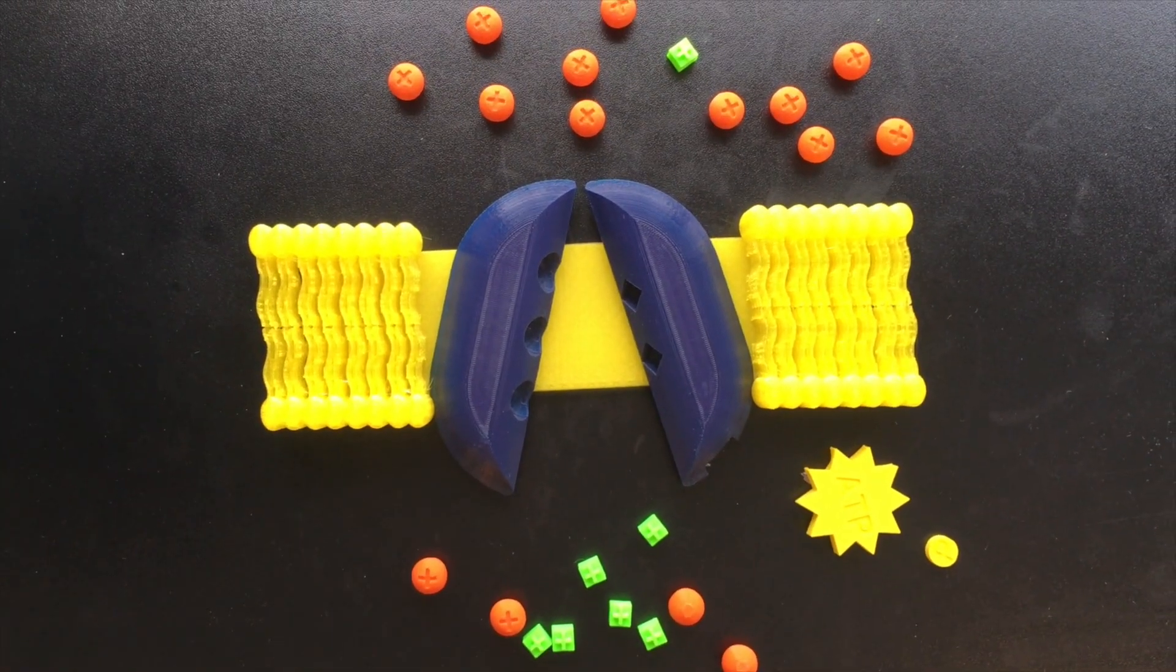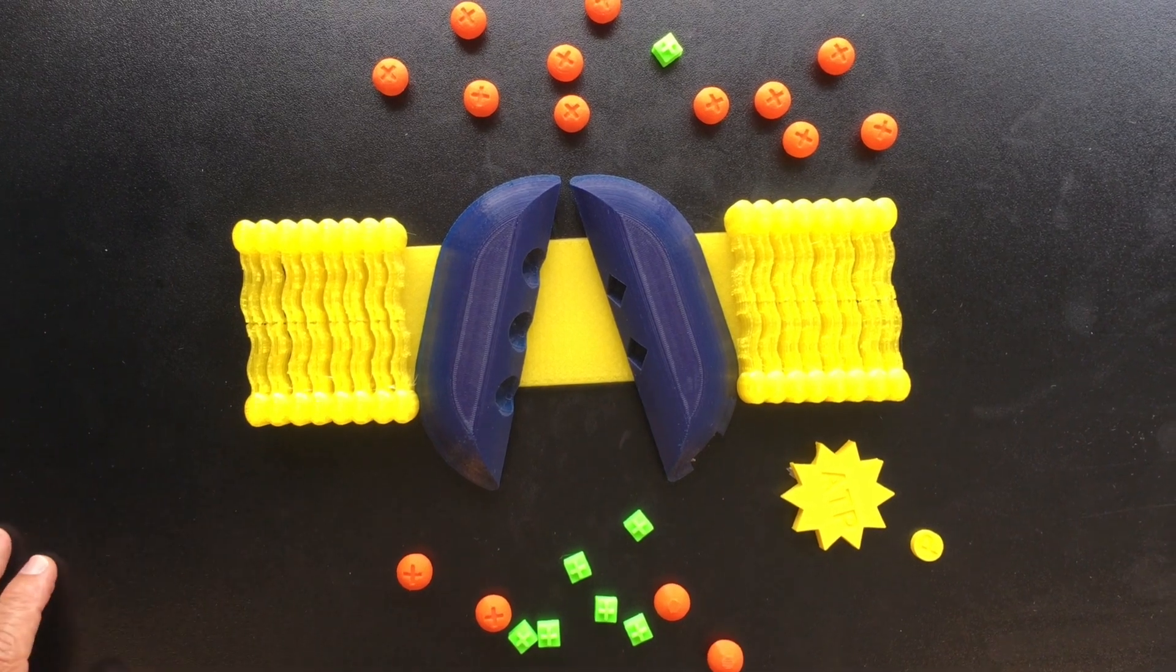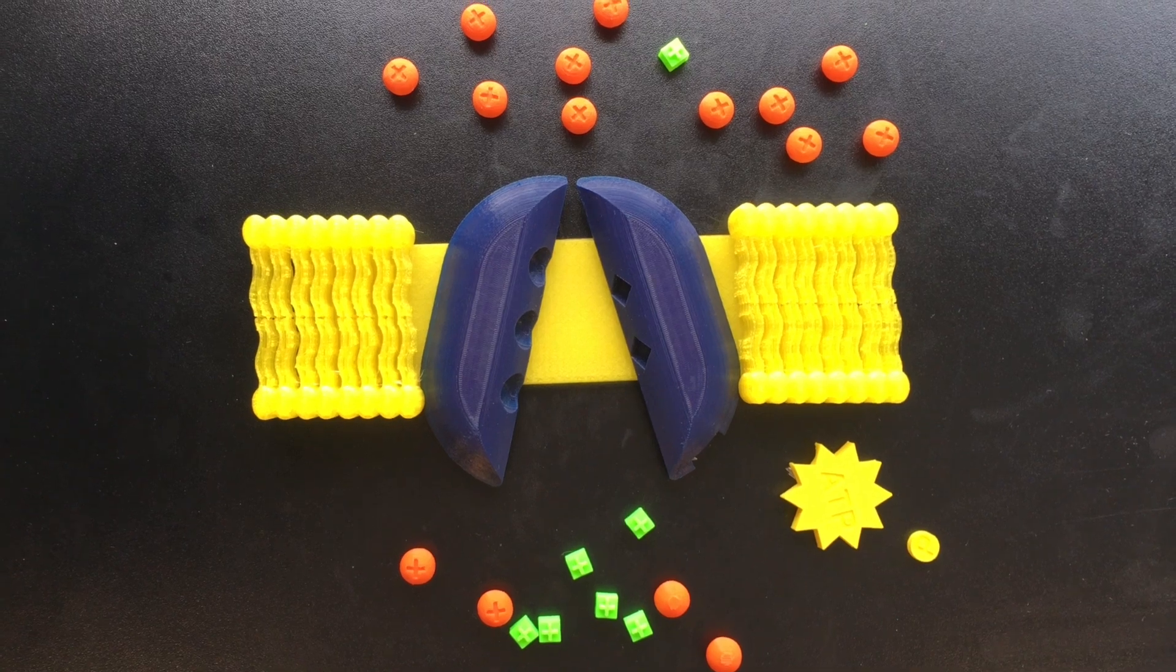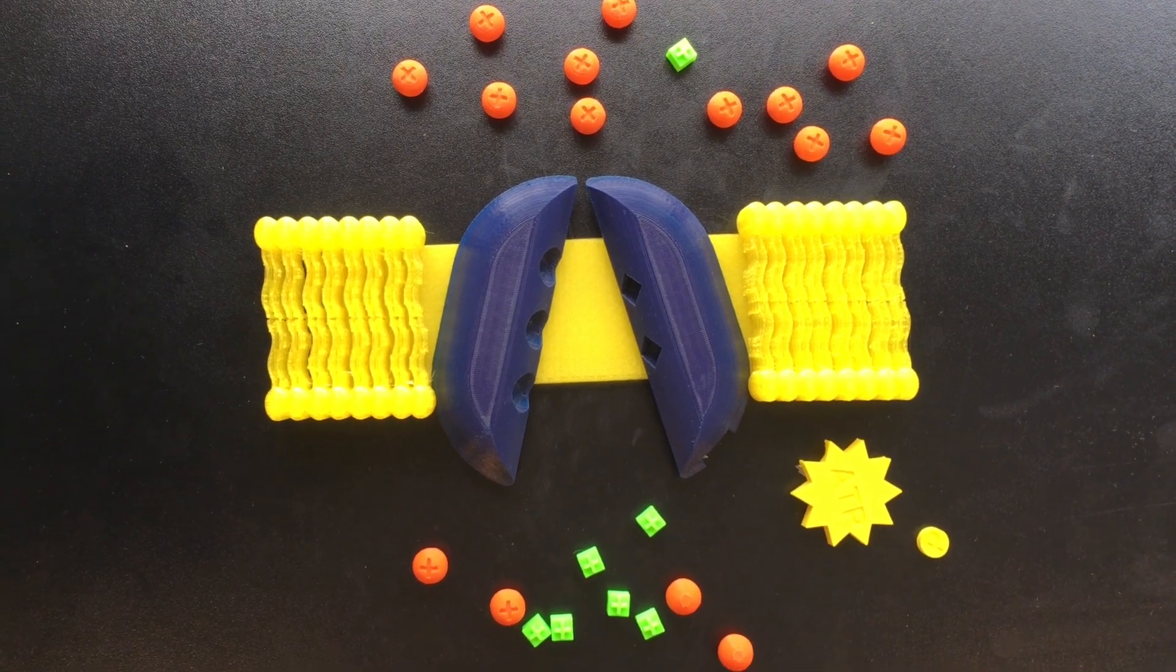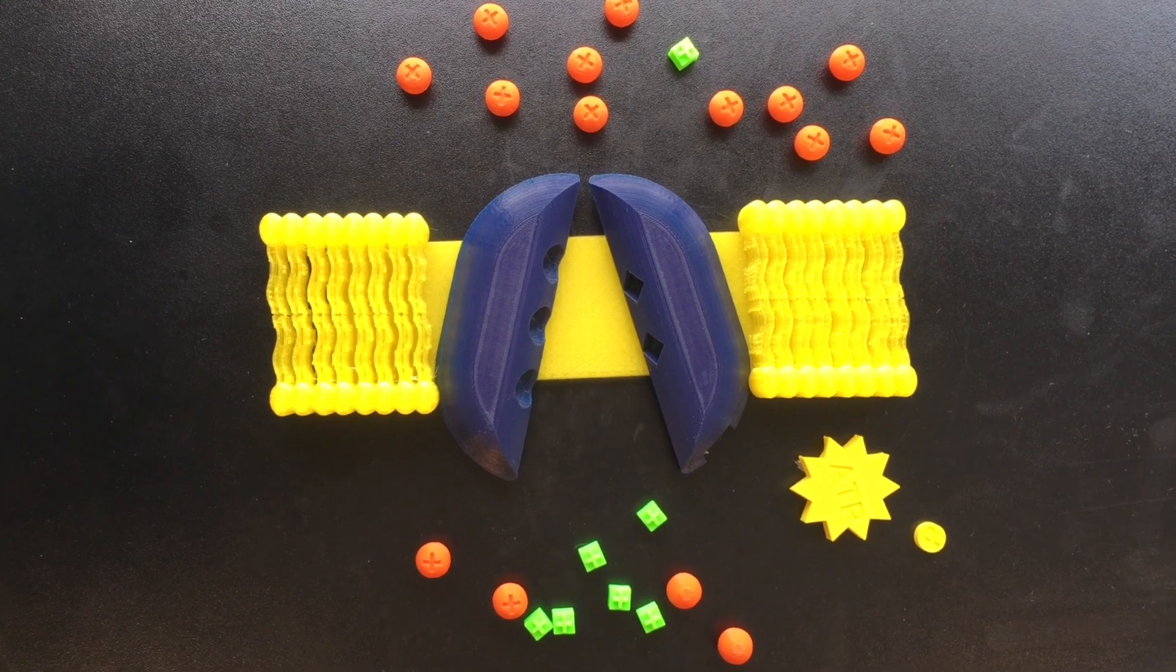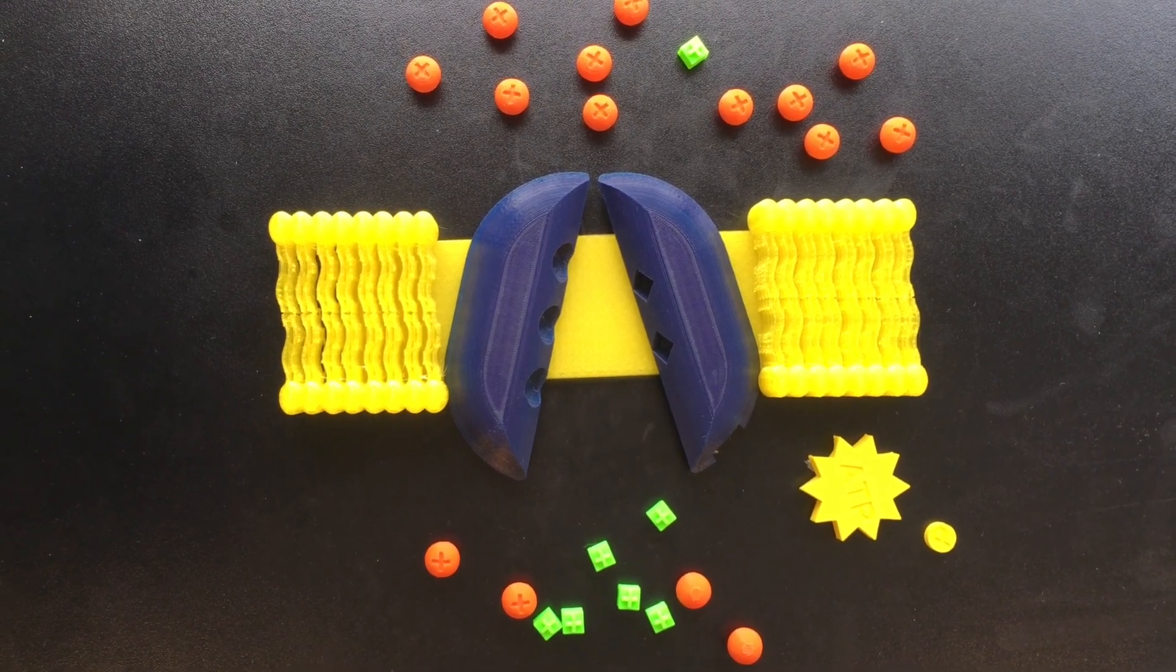Because three sodium ions are pumped out of the cell versus two potassium ions being pumped inside of the cell, this establishes a three to two ratio. That means that if we have pumped out twelve sodium ions, we have only pumped in eight.